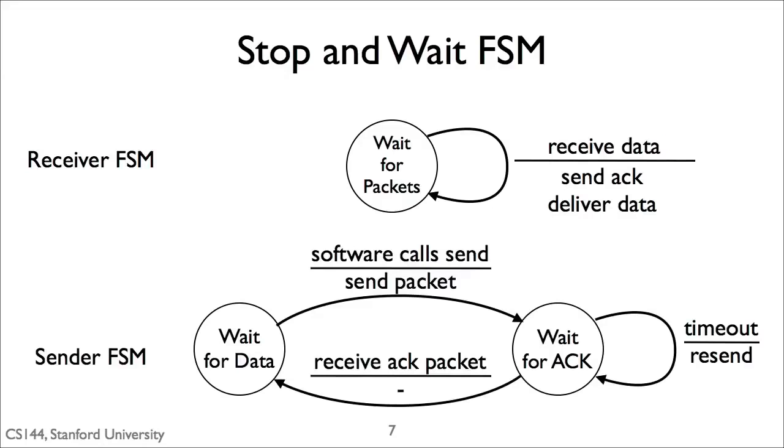The sender finite state machine has two states. The first state, it's waiting for data from the applications. This is where it's ready to send, but the application has not yet provided the data to send. When the application calls send, the protocol sends a packet with that data, or as much as it can fit in a packet. It then enters the wait for ACK state. In this state, there are two transitions. The first is if it receives an acknowledgement. If the protocol receives an acknowledgement, then it does nothing and goes back to wait for more data. If there's more data to send, it'll send new data. Or if there's no more data to send, it'll wait until the software calls send.